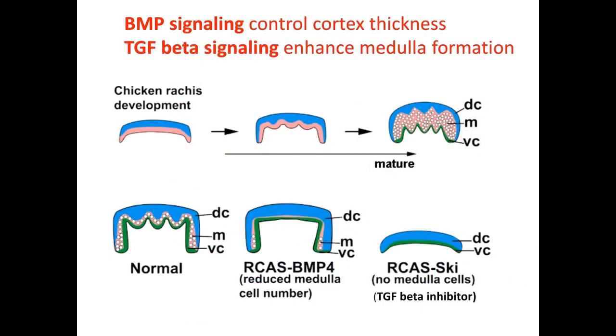We further studied the molecular control of cortex and medulla formation in the feather rachis and found that BMP signaling can control the cortex thickness, while TGF-beta signaling enhances medulla formation.